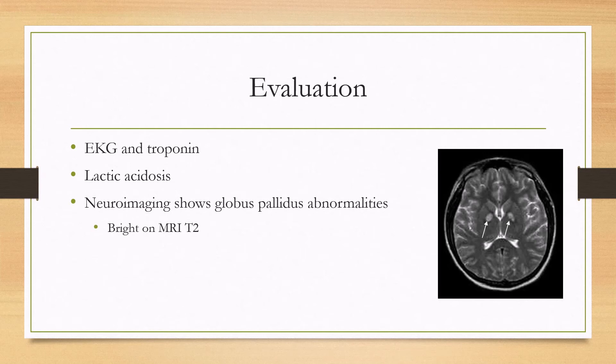Carbon monoxide poisoning can also cause arrhythmias. There can be lactic acidosis in severe cases. Sometimes neuroimaging is undertaken, which by MRI or CT will show globus pallidus abnormalities — specifically, it will appear bright on T2 on MRI.